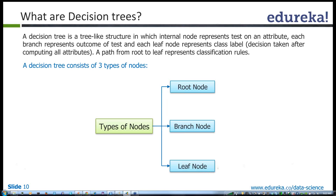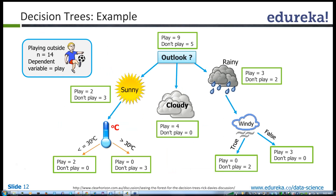Now I'll show you how a decision tree looks. Let's say we built the model on this historical data and got the decision tree. The tree first asks: what is the outlook for tomorrow — whether it's sunny, cloudy, or rainy. If it's sunny, then we check the temperature. If it's less than 30, we say play. If it's greater than 30, it's too hot, so don't play.